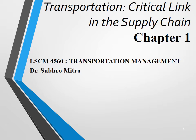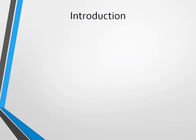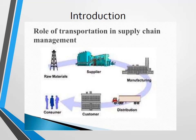Let us get started with Chapter 1: Transportation — Critical Link in the Supply Chain. In this chapter we'll look into the role of transportation in the supply chain. If you look at the figure, you'll see raw material sources, suppliers, manufacturers, customers, and consumers — they are all physically separated from one another. Transportation is the link between these different players in the supply chain, so transportation is also called the glue in the supply chain.